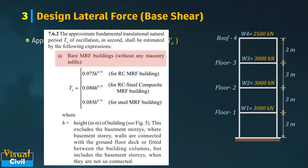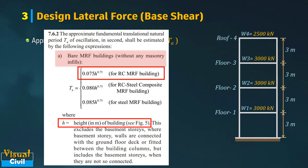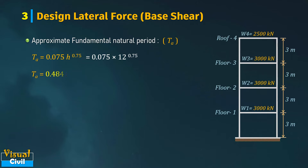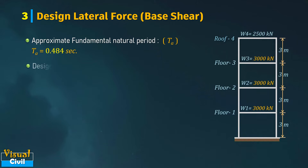In this problem, a bare RCC frame without infill walls is to be considered, hence section A of this clause is used. As the building is an RCC frame structure, the expression for RC MRF building is selected. In the expression, the value of H is the height of the building in meters. After putting in the values and solving, the fundamental natural period Ta is equal to 0.484 seconds.